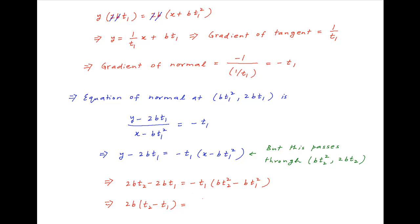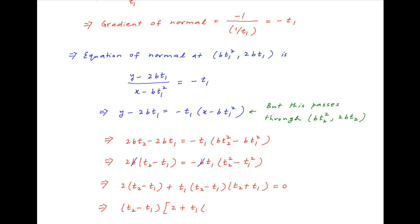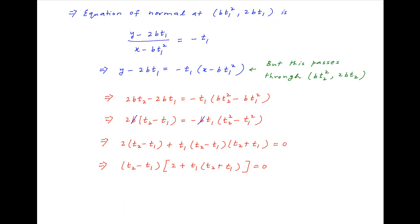This can be written as 2b(t₂ − t₁) = −t₁ · b(t₂² − t₁²). b cancels across both sides. Moving all terms to the left hand side, this can be written as 2(t₂ − t₁) + t₁(t₂ − t₁)(t₂ + t₁) = 0. Taking (t₂ − t₁) as a common factor gives (t₂ − t₁)[2 + t₁(t₂ + t₁)] = 0.